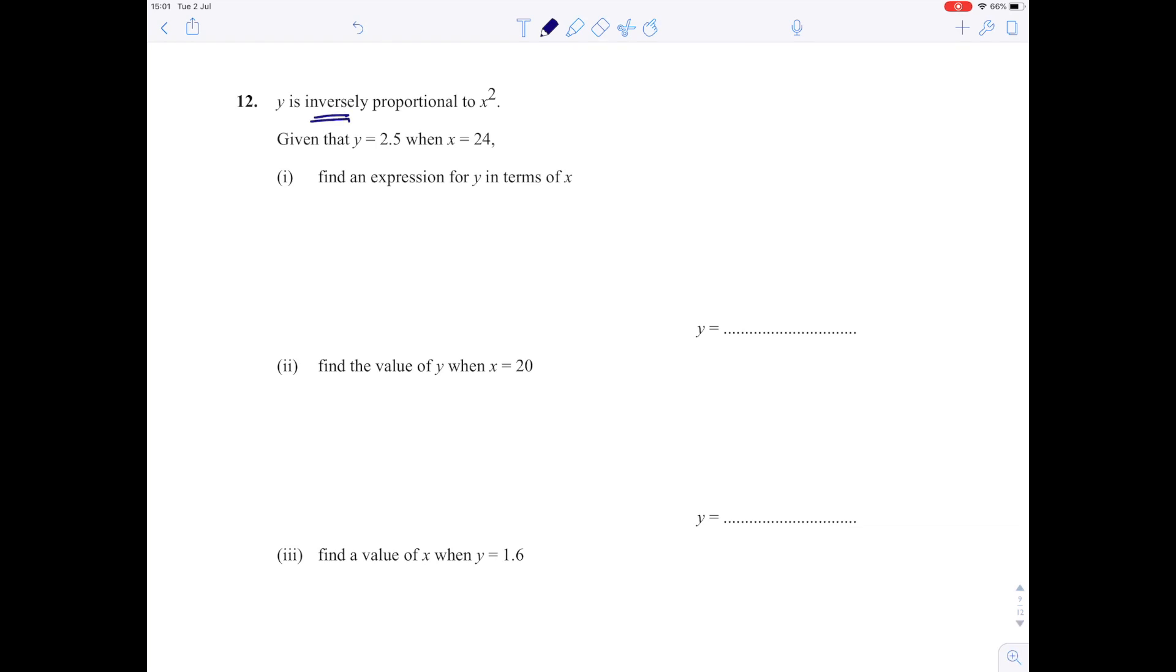y is inversely proportional to x squared. Make sure you take note that it's inversely proportional—it makes a big difference. So y is proportional to 1 over x squared. Write that as an equation: y equals k over x squared. We know y is 2.5 when x is 24. Put those values in: 2.5 is k over 24 squared, and 24 squared is 576. Multiply both sides by 576: k equals 1440. So y equals 1440 over x squared, and that's an equation that will hold for the rest of the question.